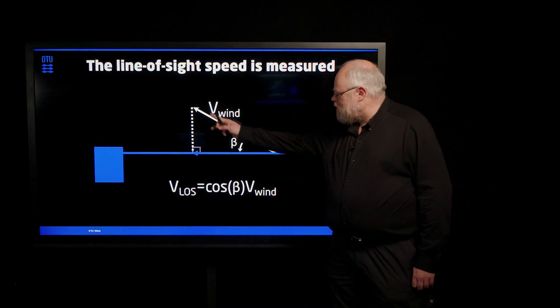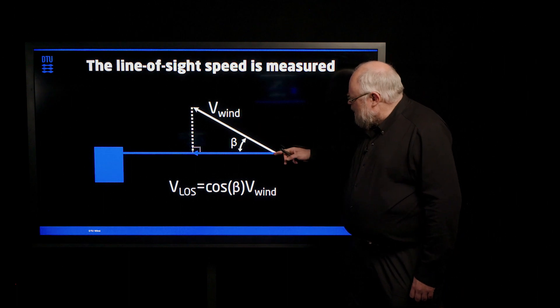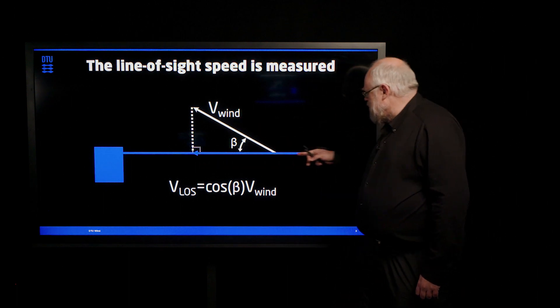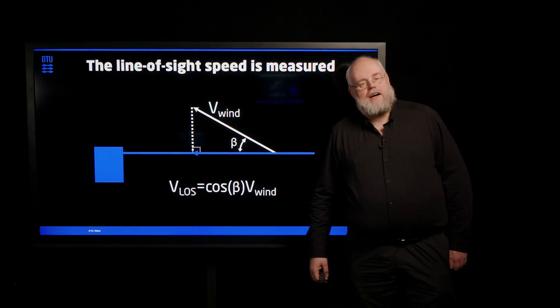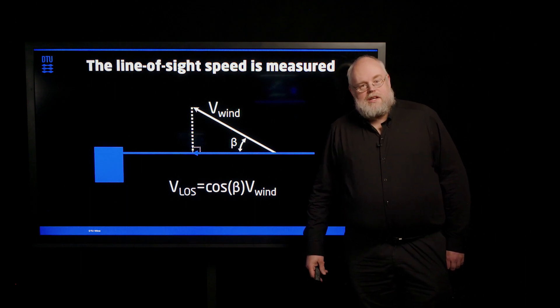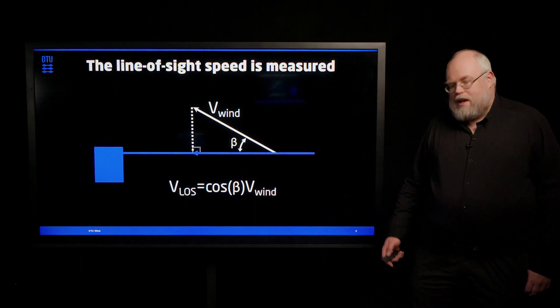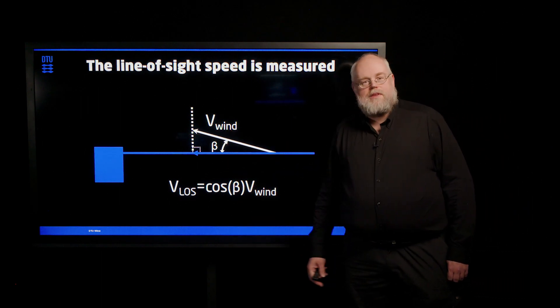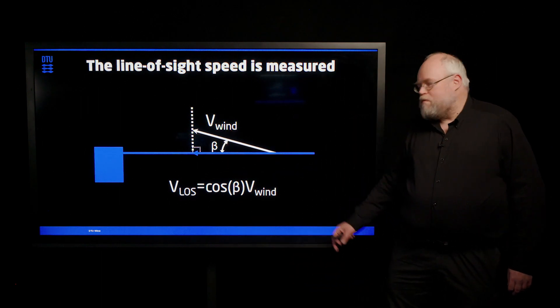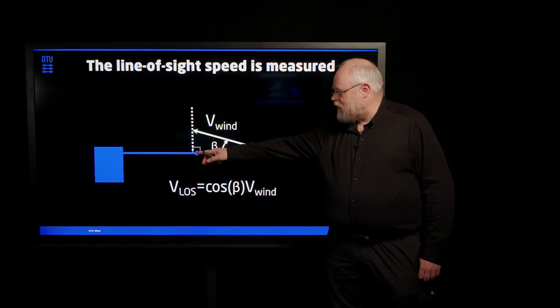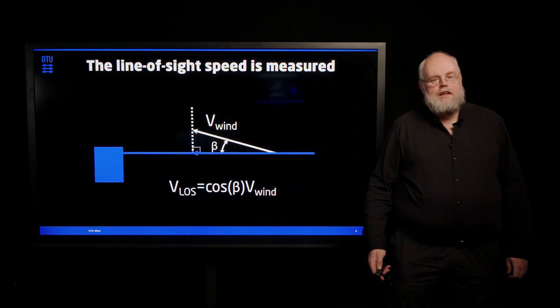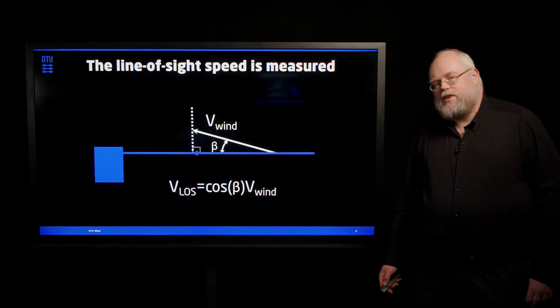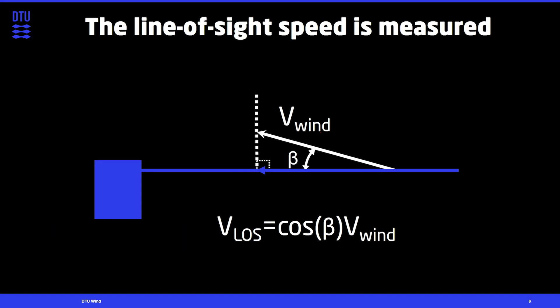only measures the component of the wind along the beam of light that it emits. So it's just the projected one. And that means that the wind could also have been like this. We have no idea about the component of the wind that is perpendicular to the line of sight. In order to tell something about that, what do we need?